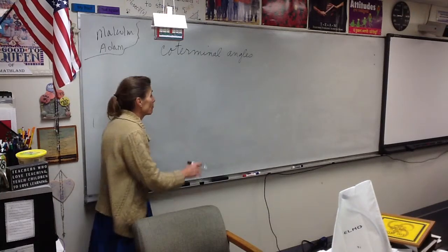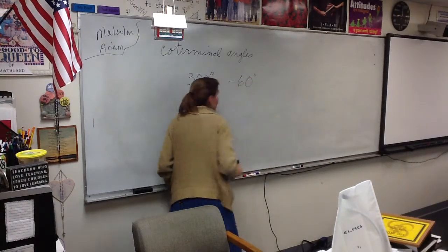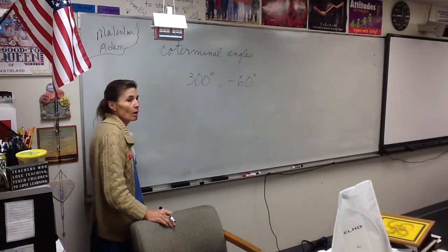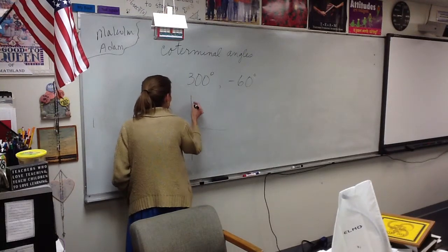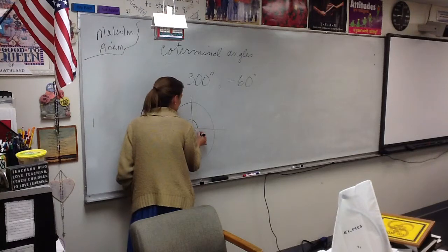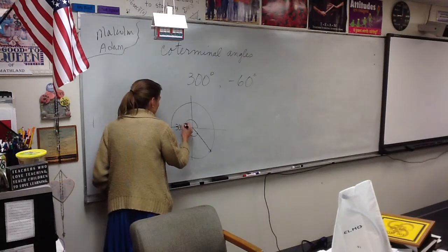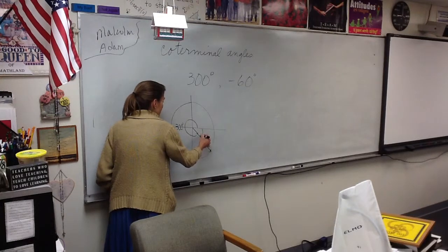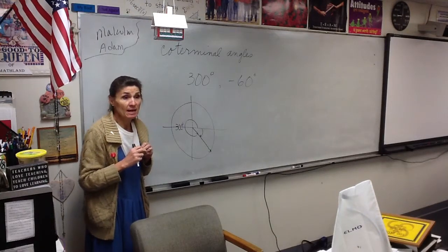Let me give you an example. 300 and negative 60 would be co-terminal angles. Think about what 300 looks like — you know what 300 looks like, right? 300 looks like this. Now, if that's 300, tell me about negative 60. What would that look like? It's not the same exact angle, but it ends up in exactly the same place.